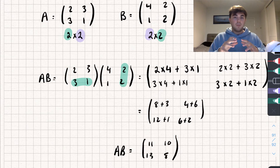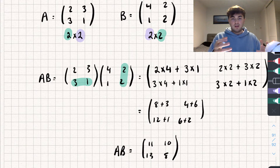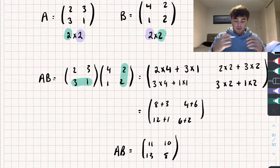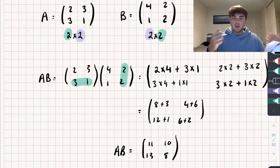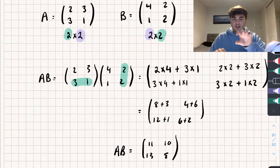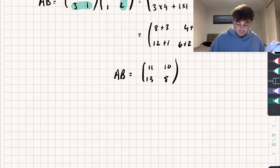Hopefully that makes sense. With practice, you'll just be able to do it without thinking. When I multiply matrices, I'm not thinking 'first row, first column' — I'm literally just going across and down. That's sort of how I think about it in my head.